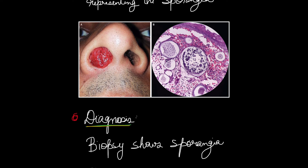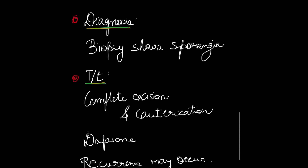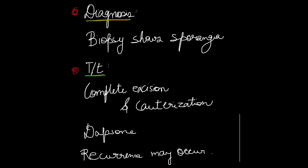Coming to the diagnosis, we will do a biopsy for diagnosing this condition and it would show the sporangia. Coming to the treatment, we have to do surgery — complete excision with a diathermy knife and cauterization of its base. Recurrence is common after surgery and Dapsone can also be used in few cases.